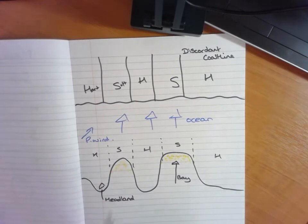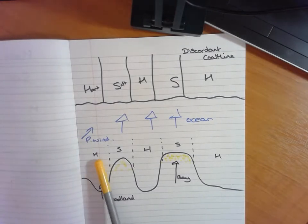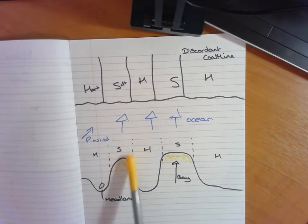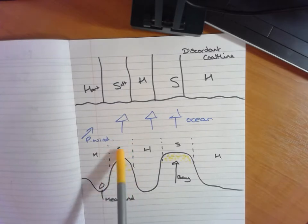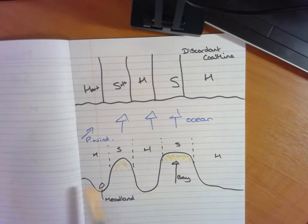Now the reason this happens again is because we've got different resistance levels of the rock. If you've got a harder rock it's going to wear away at a much slower pace than a softer rock, which is going to erode away at a much faster pace. So you get these little outcrops that we call headlands and we get bays within them. Now again that is a discordant coastline.